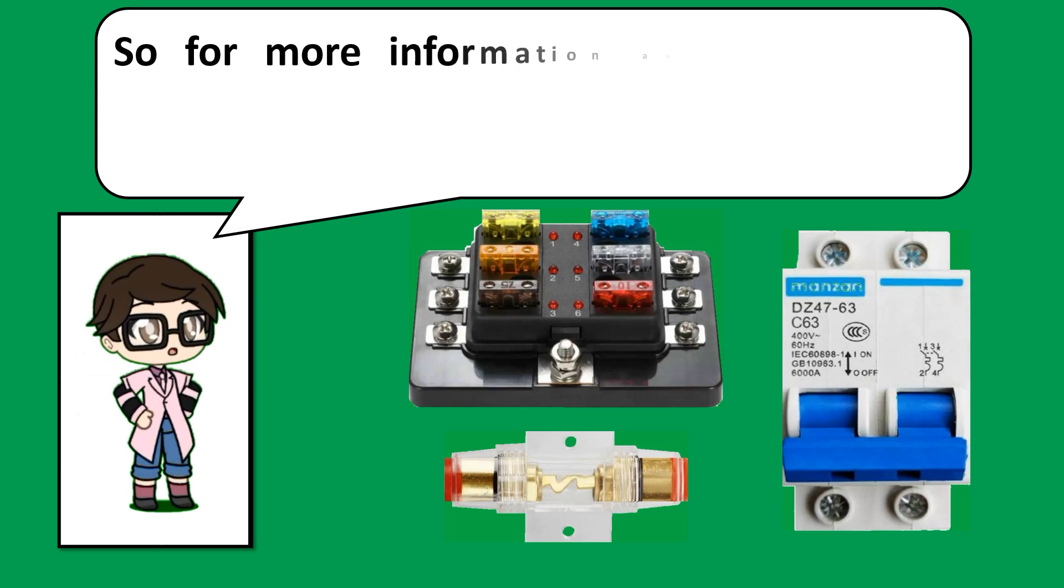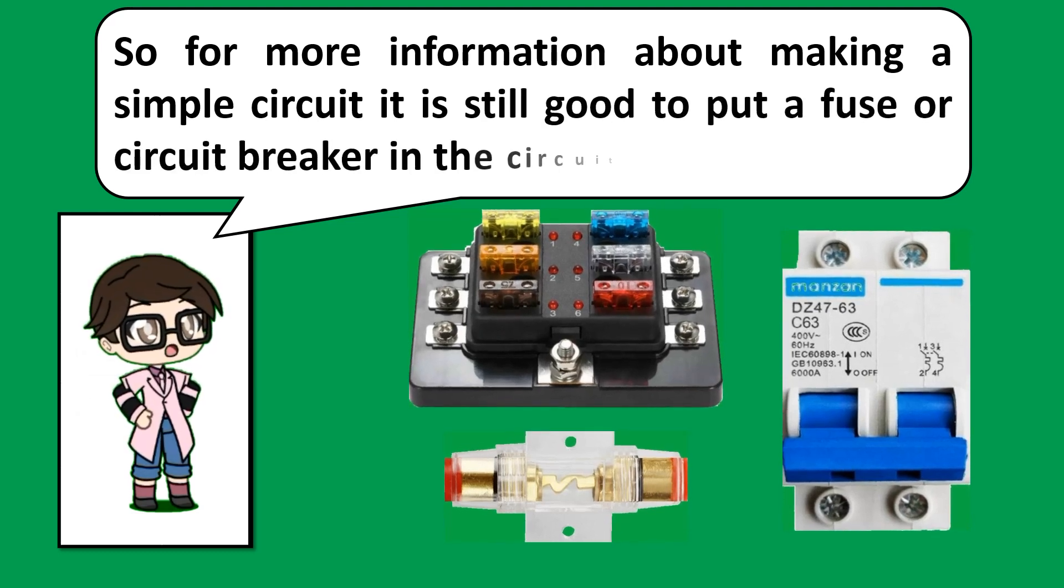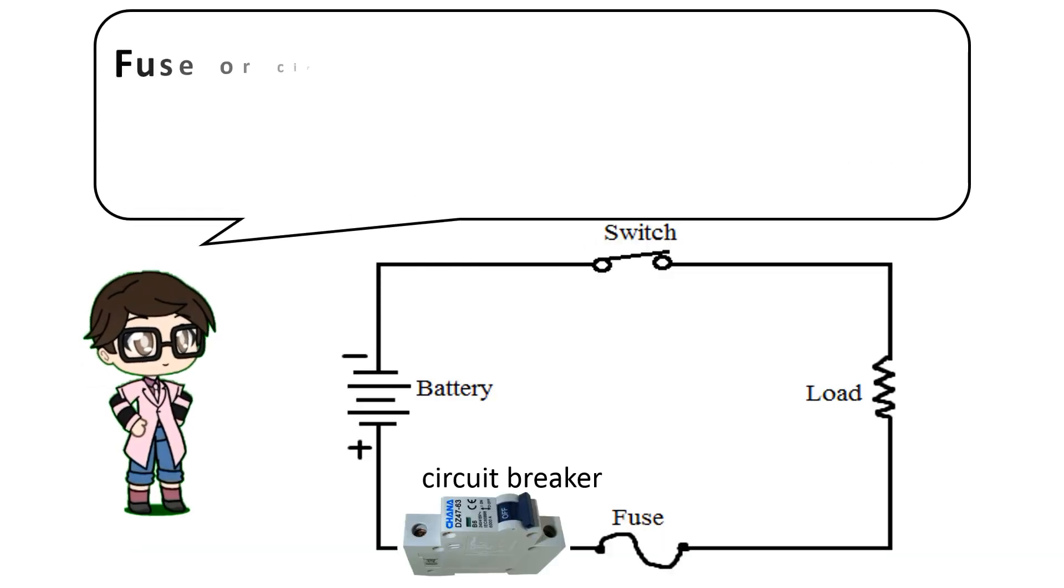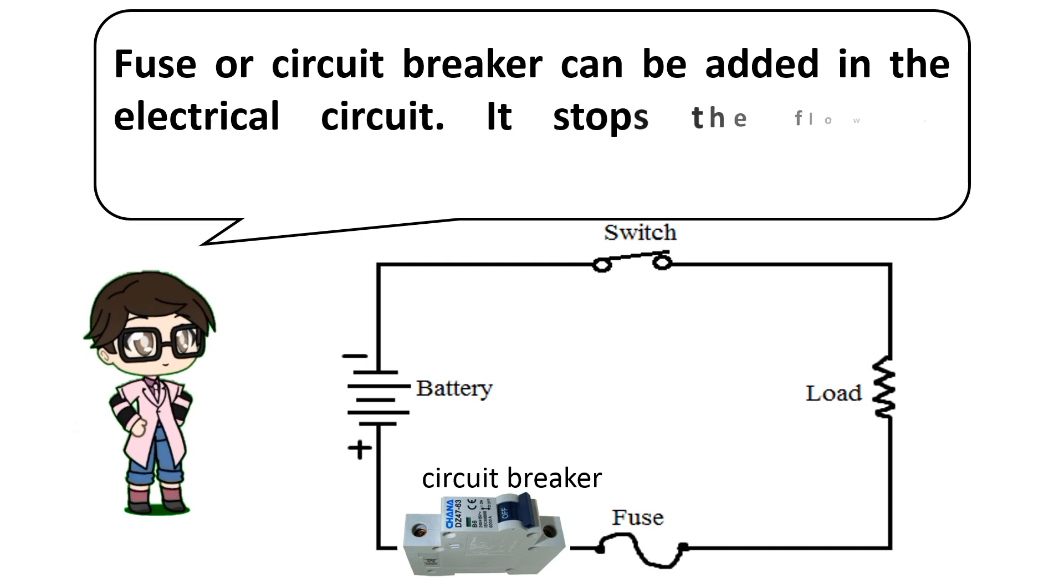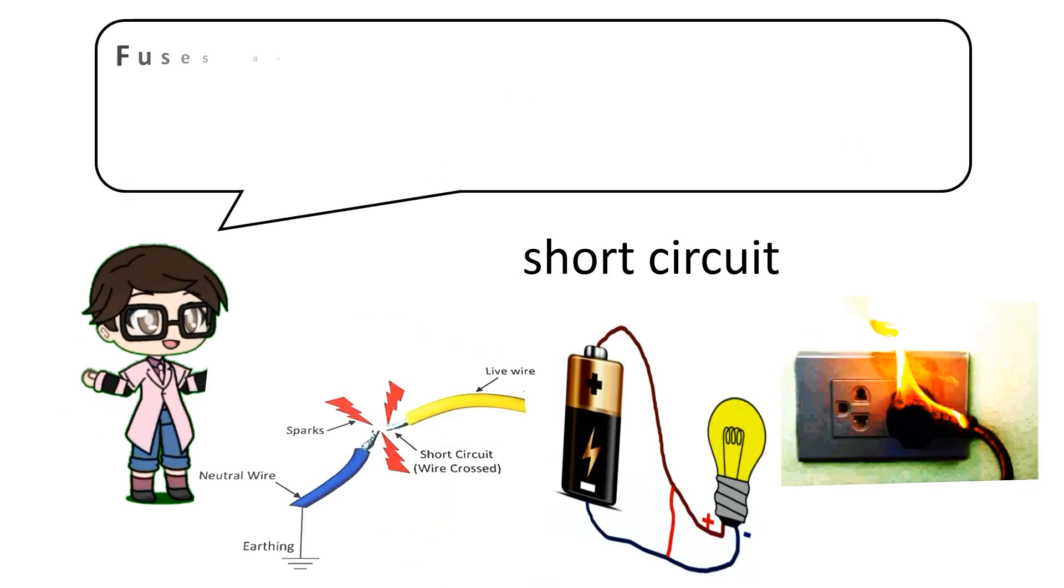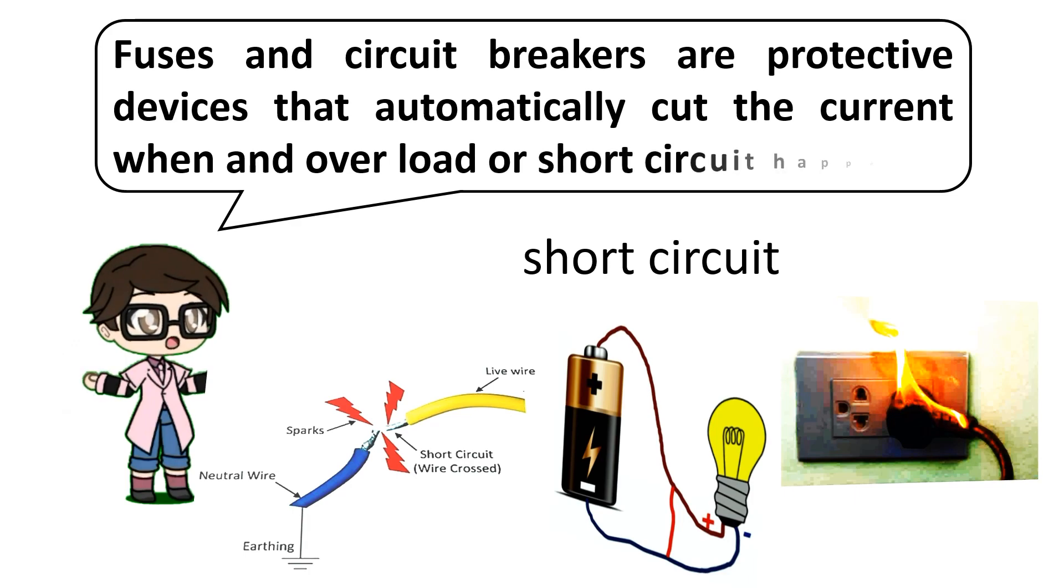So for more information about making simple circuit, it is still good to put the fuse or circuit breaker in the circuit. Fuse or circuit breaker can be added in this electrical circuit. It stops the flow of electricity when there is trouble in the line. Fuses and circuit breakers are protective devices that automatically cut up the current when an overload or short circuit happens.